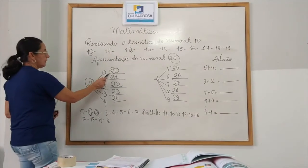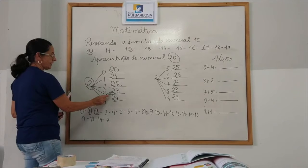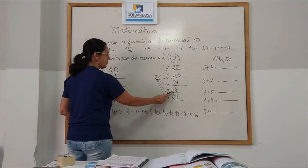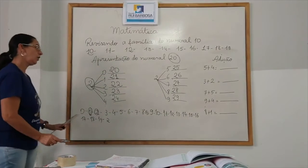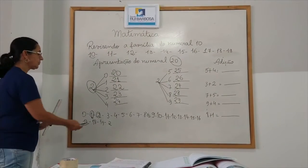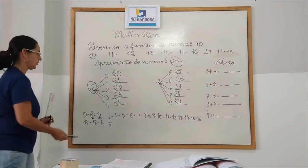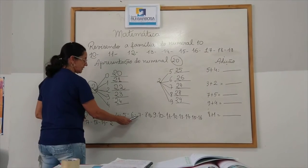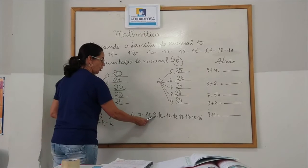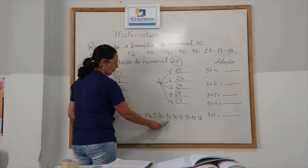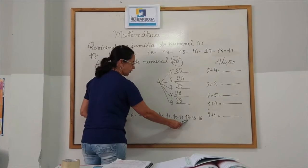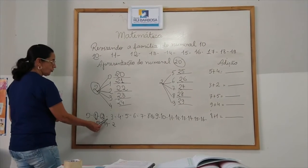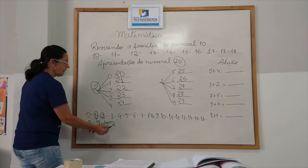20, 21, 22, 23, 24, 25, 26, 27, 28, 29. Agora nós vamos contar a sequência e vamos descobrir quem vem depois do 19. 0, 1, 2, 3, 4, 5, 6, 7, 8, 9, 10, 11, 12, 13, 14, 15, 16, 17, 18, 19, 20.